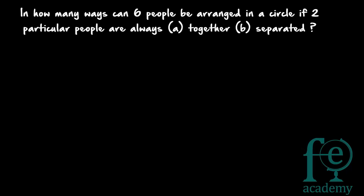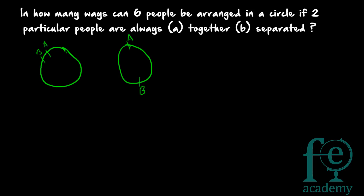Welcome to today's class. Today's question is: in how many ways can six people be arranged in a circle if (a) two particular people are always together, and (b) two particular people are always separated? Six people are to be arranged in a circle. Suppose A and B are the two particular people — first case is A and B always together, second case is A and B always separated.